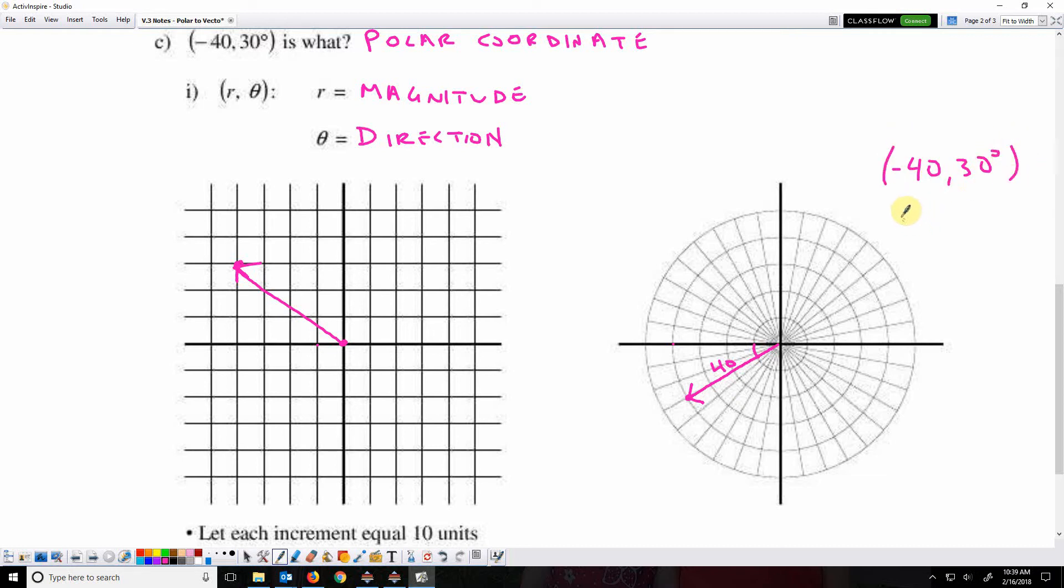We could also have used 40, which would have brought us out here, but then we would have to go all the way around to here. So to here is 180, 190, 200, and 210. So 40 and 210 degrees would give us the same vector.